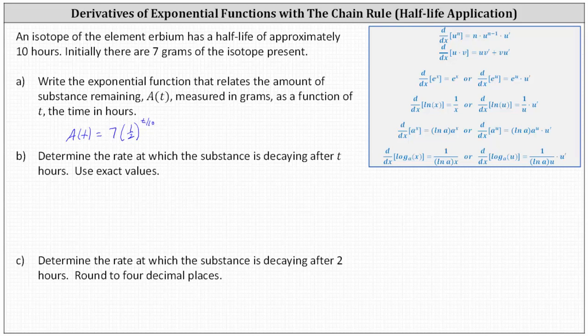For part B, we're asked to determine the rate at which the substance is decaying after t hours, and we're told to use exact values. To determine the rate at which the substance is decaying after t hours, we need to determine A prime of t.